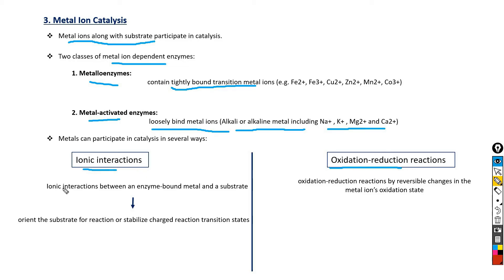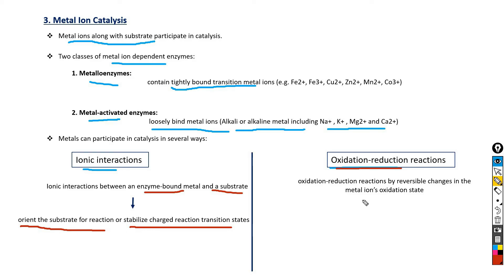In ionic interactions, ionic interactions between an enzyme-bound metal and a substrate perform two functions: first, they help orient the substrate for reaction, and second, they stabilize the charged transition state. These ionic interactions between enzyme-bound metal and substrate are basically bonding interactions and work similarly to the binding energy of the enzyme-substrate complex. In oxidation-reduction reactions, the reaction takes place by reversible changes in the metal ion's oxidation state.